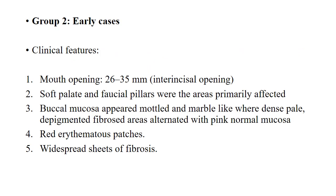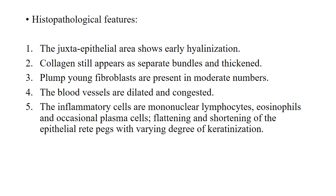Group 2: mouth opening is 26–35 mm. Soft palate and faucial pillars are primarily affected. Buccal mucosa appears mottled and marble-like, with dense, pale, depigmented fibrosed areas alternating with pink normal mucosa. Red erythematous patches can also be seen. Widespread sheets of fibrosis are seen. Histopathologically, the juxta-epithelial area shows early hyalinization; collagen appears as separate thickened bundles; plump young fibroblasts in moderate numbers; dilated and congested blood vessels; inflammatory cells are mononuclear lymphocytes, eosinophils, and occasional plasma cells; and flattening and shortening of epithelial rete pegs with varying degrees of keratinization.